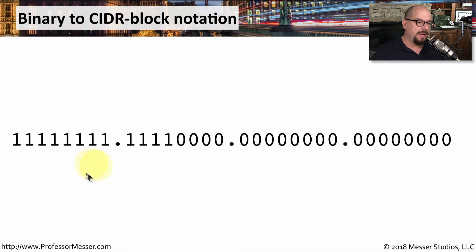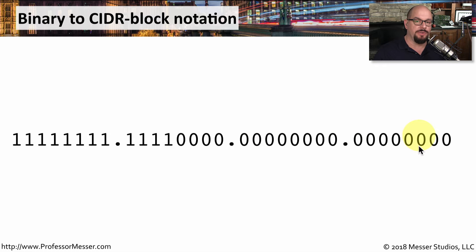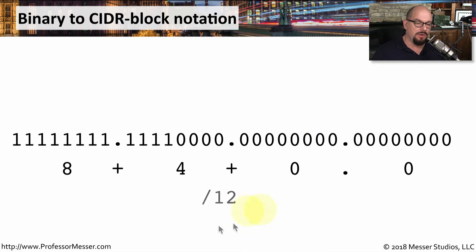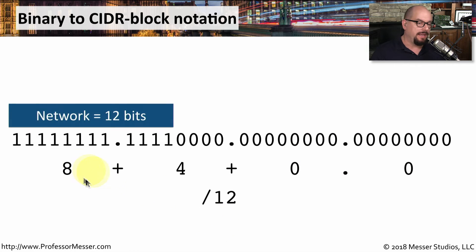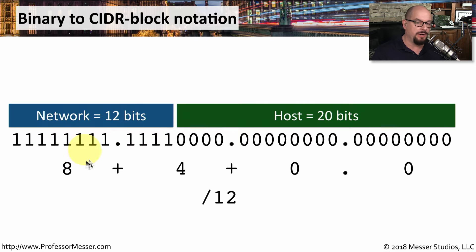Here's another binary subnet mask, which is all ones in the first octet, four ones and four zeros in the second octet, and then all zeros after that. We add up all of the ones — eight plus four plus zero plus zero — for a slash 12 subnet mask. That gives us 12 bits for network addresses and 20 bits for hosts on each one of those networks.